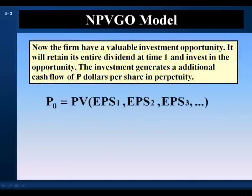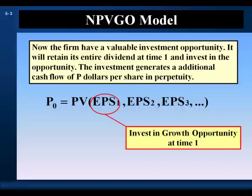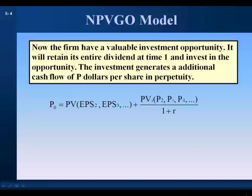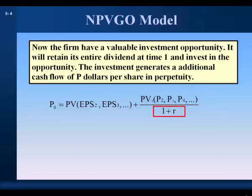Now the firm has a valuable investment opportunity. It will retain its entire dividend at time one and invest it in the opportunity. The investment generates an additional cash flow of P dollars per year in perpetuity. The cost of the investment at time one is the earnings per share at time one. So we invest the earnings per share at time one in the growth opportunity at time one. The value of the project at time one is the present value at time one of the project's cash flow stream, and is discounted back one year to get its contribution to the current price of the firm's stock.